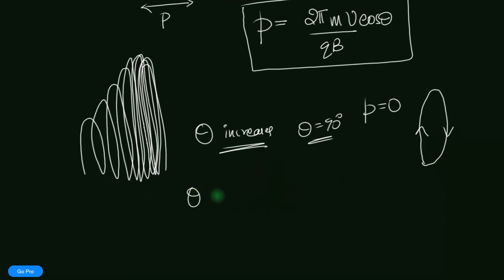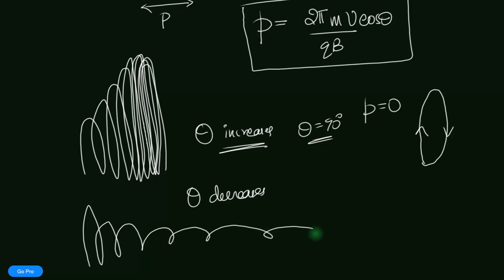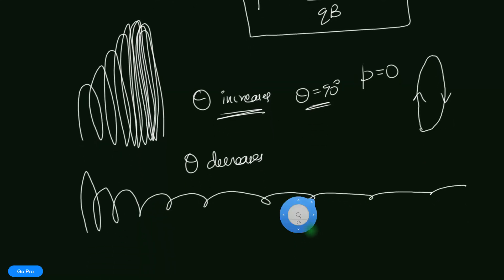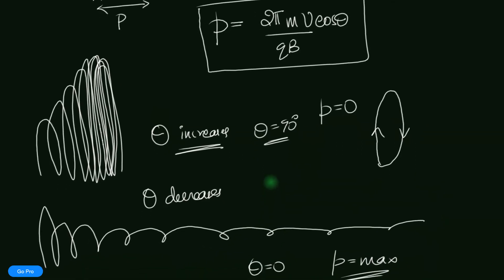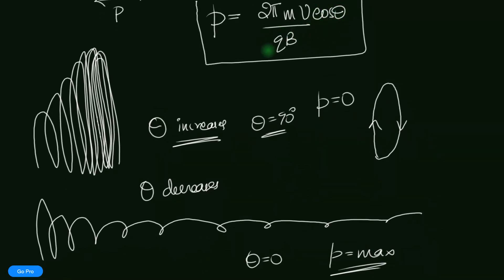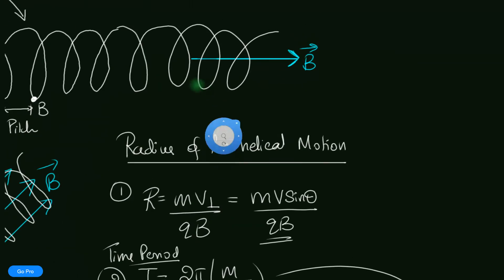What happens if theta decreases? The perpendicular component decreases, so you'll see the charged particle moving in a more stretched-out helix. In the limiting case when theta approaches 0, the pitch is maximum. But the concept of pitch doesn't even make sense at theta = 0, because there's no circular motion — the charged particle just goes straight in the direction of the magnetic field with no force. See you next time.